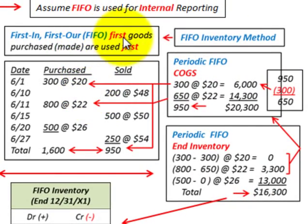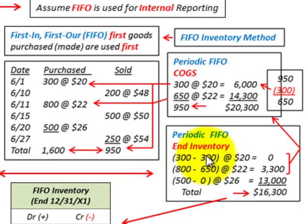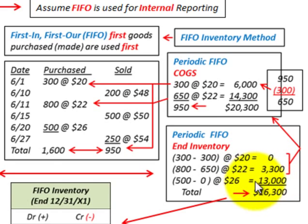Looking at our FIFO — that's first in, first out, where the first goods purchased are used first. With the same example and numbers, we would use our oldest inventory first, so we'd have nothing sitting in our oldest inventory. But against our sales, our most recent purchases would have some inventory sitting there. Our total inventory for the FIFO method is $16,300.